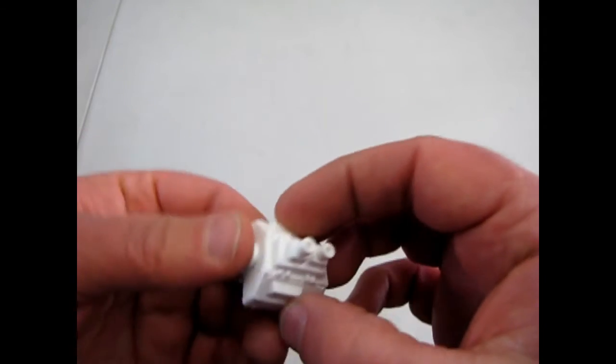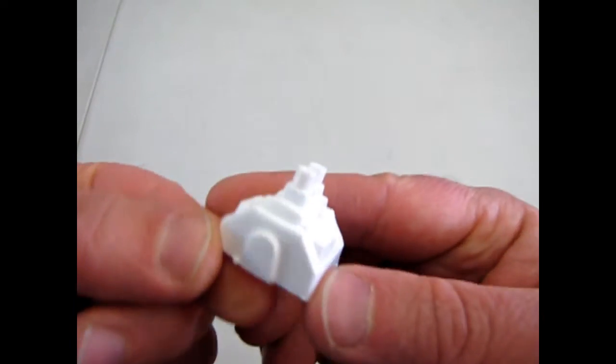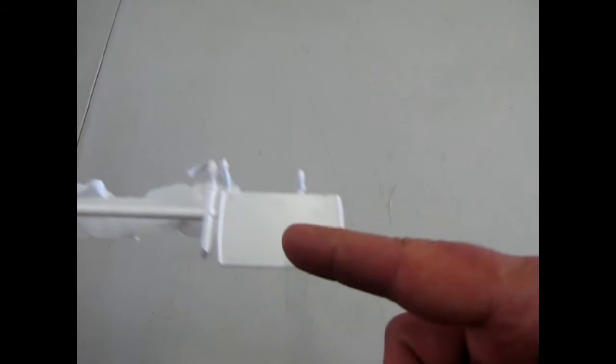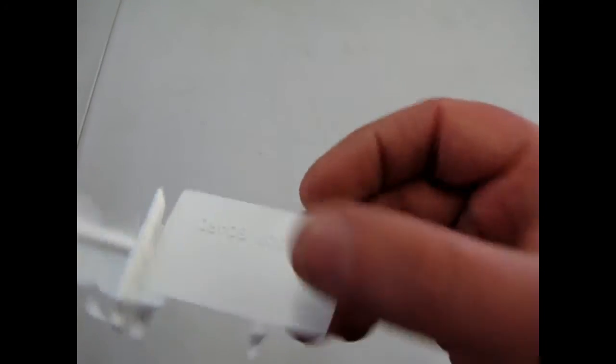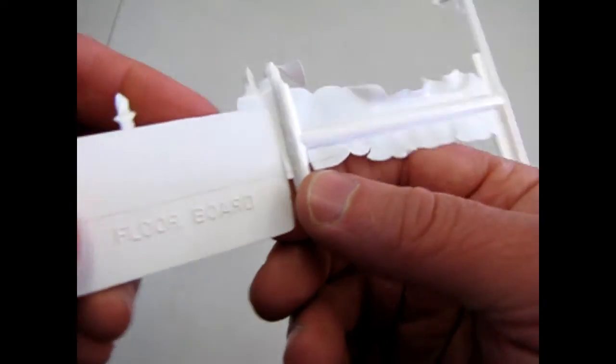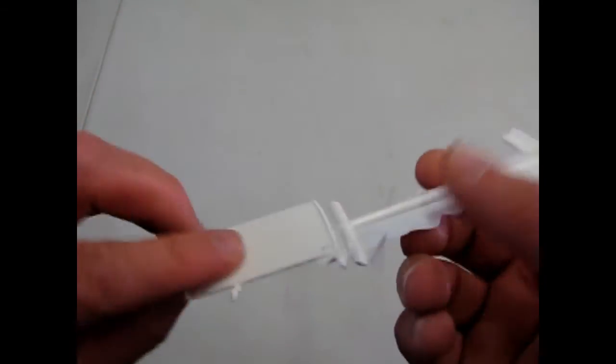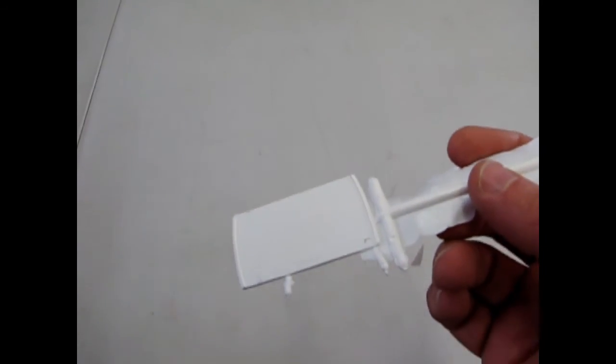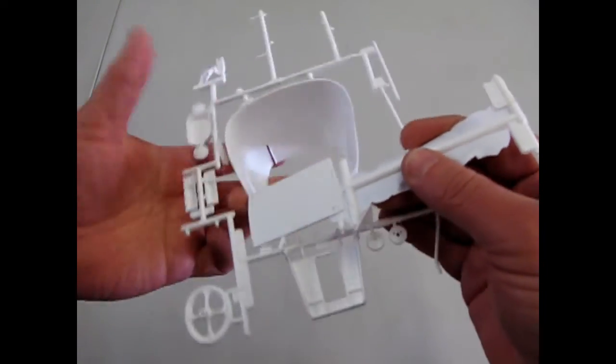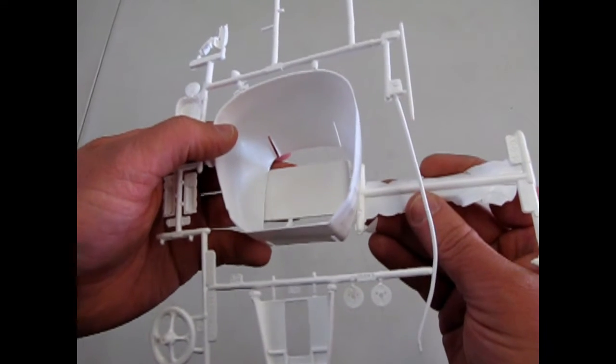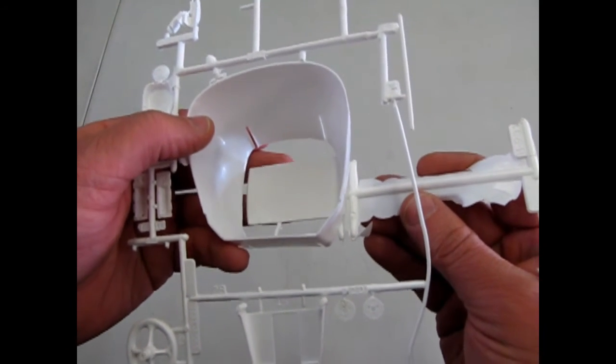That's the engine you get. Just one half of a big block motor. This is the pan that goes underneath. It even says floorboard on there. So... That would go in here on the bottom somewhere. Just like that.